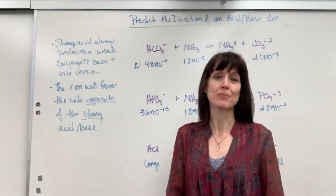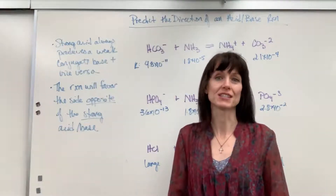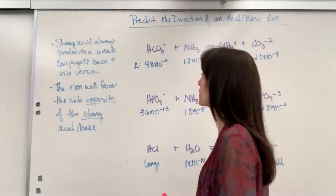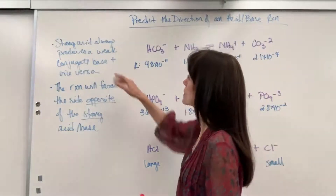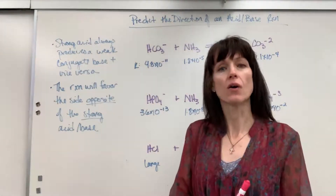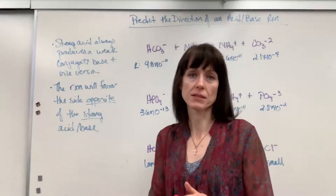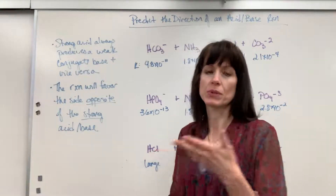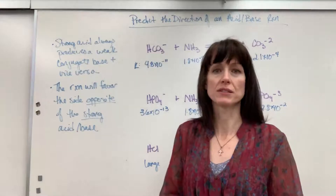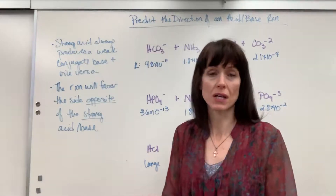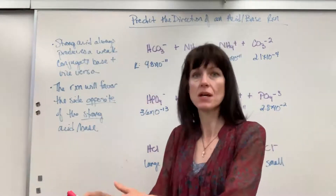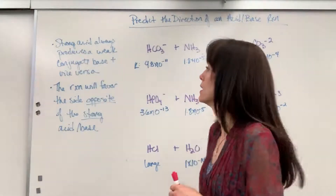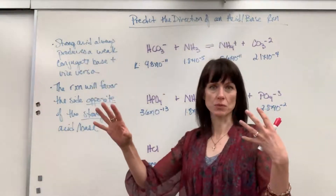We're going to talk about predicting the direction of an acid-base reaction. The first takeaway is a strong acid will always produce a weak conjugate base, and vice versa — a weak acid produces a strong conjugate base. If we're talking about bases, a strong base produces a weak conjugate acid.